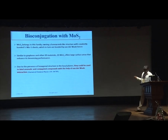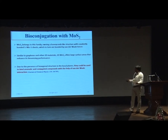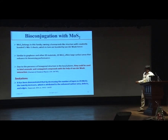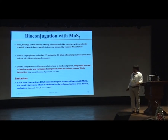Another option is MoS2, which belongs to a honeycomb lattice-like structure with covalently bonded sulfur-molybdenum-sulfur layers in turn bonded by van der Waals interaction. Similar to graphene, it is a 2D material and due to its hexagonal structure in the basal plane it can bind aromatic and conjugated compounds via van der Waals interactions. However, it has been demonstrated that by decreasing the number of layers in 2D MoS2, the toxicity increases, attributed to enhanced surface area and defects.